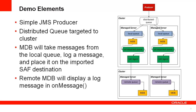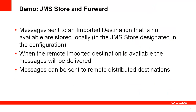As you'll see in the demo, it will show how messages arrive on the local domain and then are sent to the remote domain. On the remote domain, I have a message-driven bean which takes messages off of the remote queue and displays a message on the screen. In the demo I'll show how messages sent to a destination that's not available are stored locally, and then when that remote destination is available the messages will be delivered. We'll also be sending messages to a remote destination that is a distributed destination.